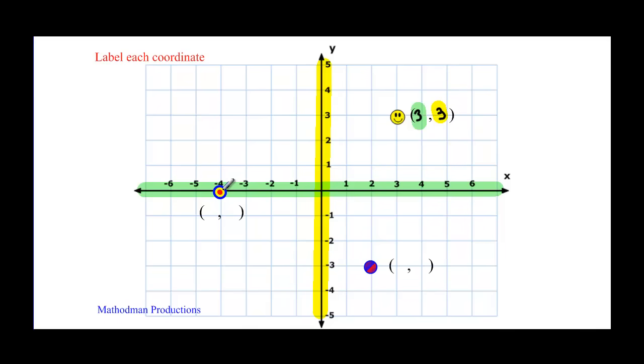Looking at this target looking point right here. Where is it along the x-axis? Negative four. It's the first number that you put there. And where is it on the y-axis? It's actually at zero. It didn't move up or down. It's a zero.